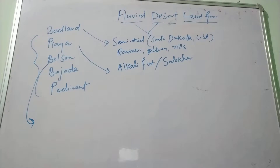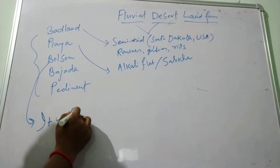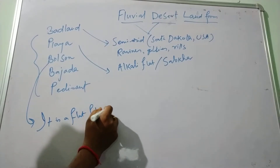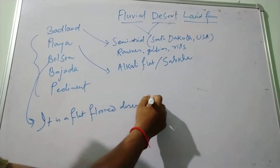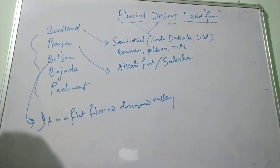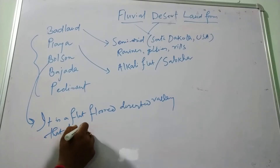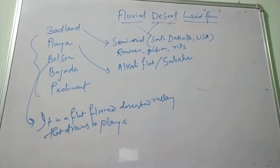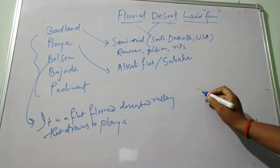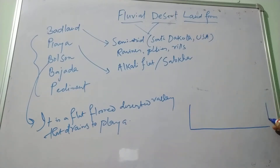Next is bolson. It is a flat floor deserted valley. This is an inland basin that drains to a playa.